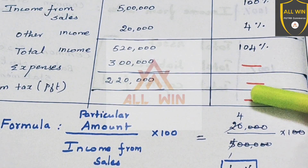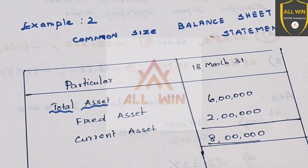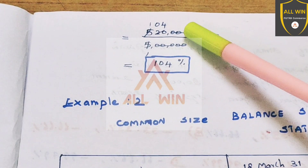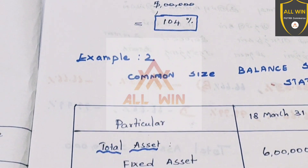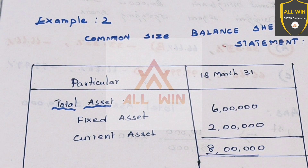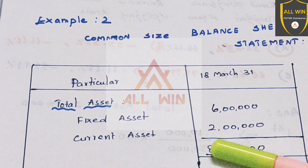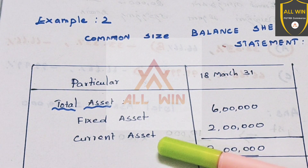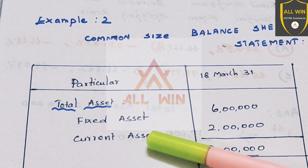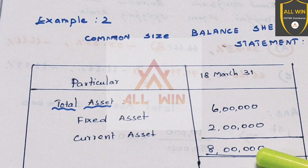Now for the common size balance sheet statement, we look at particular year costs against total assets. In the balance sheet there are assets and liabilities. The fixed asset is 6 lakhs, the current asset is 2 lakhs, making the total asset 8 lakhs.